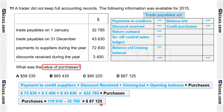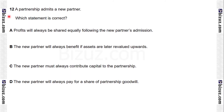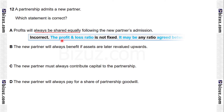Our answer is represented by option D. Question 12. A partnership admits a new partner. The requirement is which statement is correct. Option A: profits will always be shared equally following the new partner's admission. This is incorrect because the profit and loss ratio is not fixed — it may be any ratio agreed between partners.